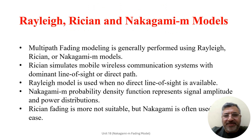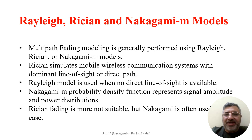The rapid fluctuation of instantaneous received power due to multipath effects are usually described with Rayleigh, Rician, or Nakagami-M models. The Rician model is useful for modeling mobile wireless communication systems when the transmitting signal can travel toward the receiver with a strong dominant line-of-sight or direct path. Where reflective paths exist and signals travel via multipath, the Rayleigh fading model is suitable, typically used when a direct line of sight does not exist due to some obstruction.